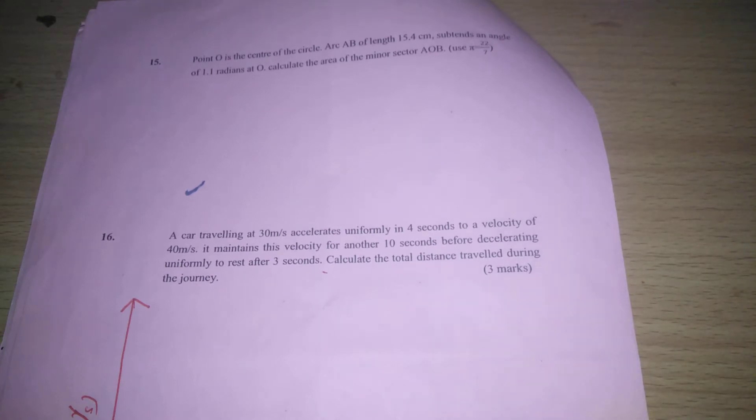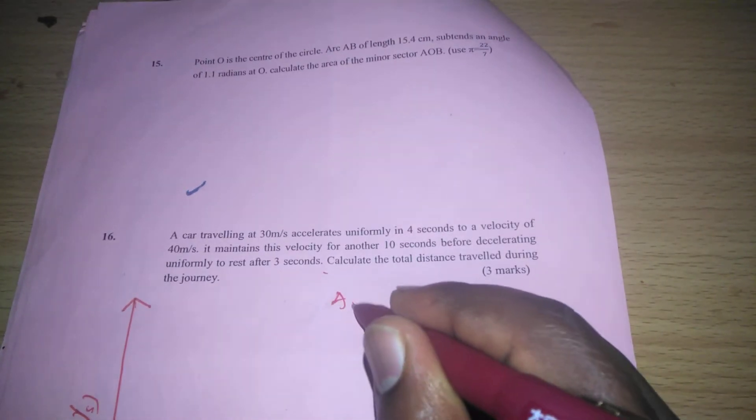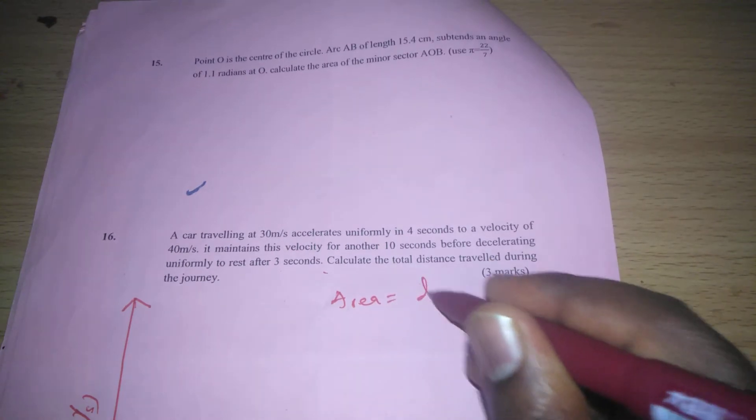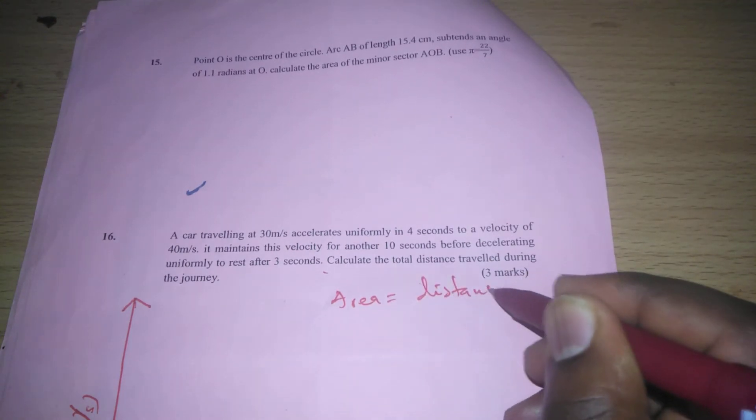When we plot a velocity time graph, the area under the graph gives us distance covered. For a velocity time graph, we should know that when we calculate the area, it gives us distance covered. Area of the graph will be equal to distance covered in meters.